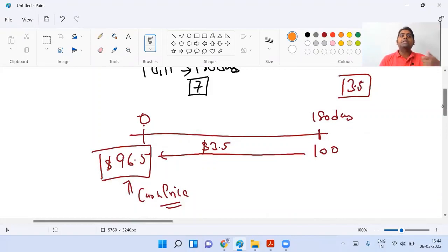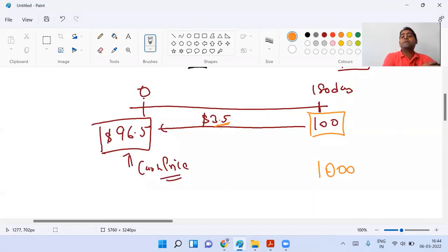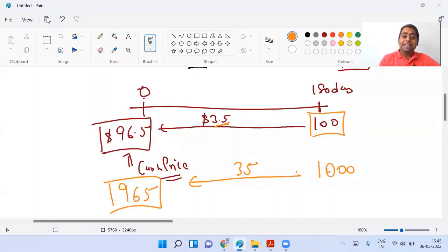Please understand one more point. Every bond does not have a par value of 100. Suppose if the par value was 1000, then there is a discount of 3.5%, so what is going to be the discount? 3.5% of 1000 is 35. So my cash price will be 965. It represents the percentage, so every bond will not be 100, but it can be 10,000 also.